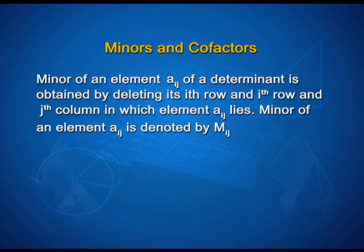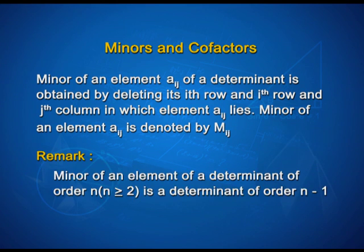To begin with, what is a minor of a determinant? Minor of an element a_ij of a determinant is obtained by deleting its i-th row and j-th column in which element a_ij lies. Minor of an element a_ij is denoted by capital M_ij. Remark: Minor of an element of a determinant of order n, where n is greater than or equal to 2, is a determinant of order n minus 1.